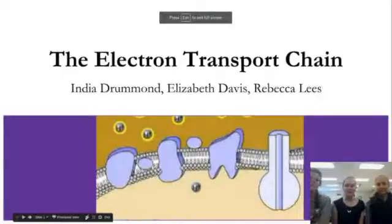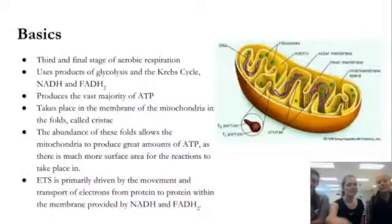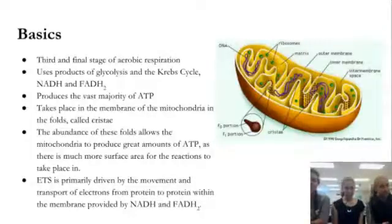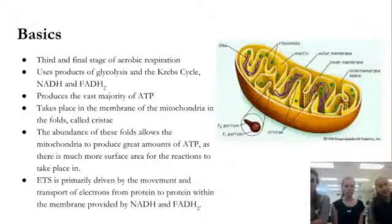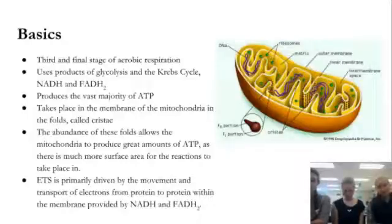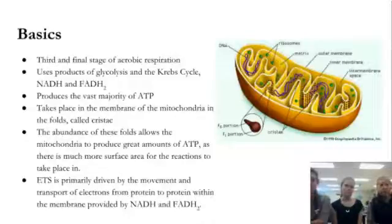Today we're going to be talking about the electron transport chain. The ETC is the third and final stage of aerobic respiration, and it utilizes the products of glycolysis and the Krebs cycle — the cofactors NADH and FADH2. Note that NADH is not the same as NADPH, which is used in photosynthesis. The ETC produces the vast majority of ATP, and it takes place in the membrane of the mitochondria.